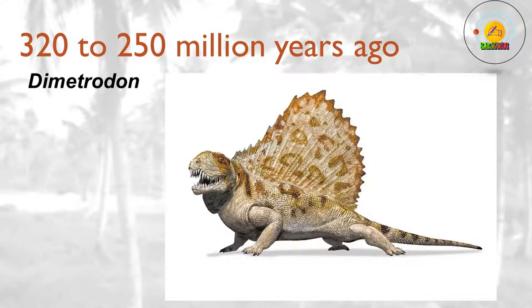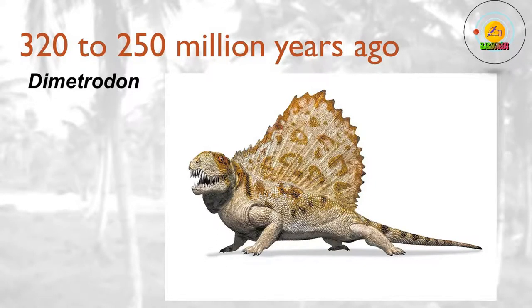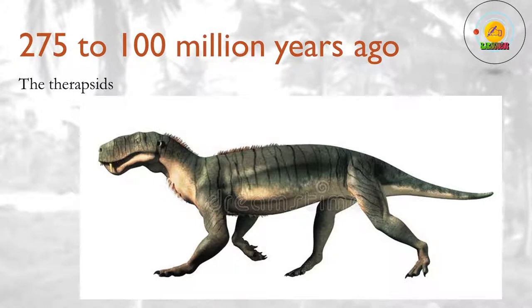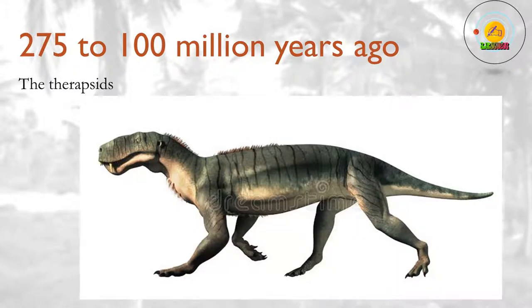320 to 250 million years ago? The pelycosaurs, the first major group of synapsid animals, dominate the land. The most famous example is Dimetrodon, a large predatory reptile with a sail on its back. Despite appearances, Dimetrodon is not a dinosaur. 275 to 100 million years ago? The therapsids, close cousins of the pelycosaurs, evolve alongside them and eventually replace them. The therapsids survive until the early Cretaceous, 100 million years ago. Well before that, a group of them called the cynodonts develops dog-like teeth and eventually evolves into the first mammals.